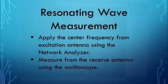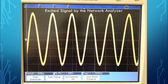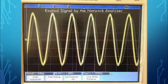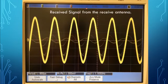The resonating wave measurement is carried out by connecting both the excitation antenna and the receive antenna. We apply 1.8 GHz from the excitation antenna using the network analyzer, then measure the signal received on the receive antenna and observe the waveform on the oscilloscope. This is the signal fed into the cavity by the excitation antenna, and this is the received signal from the receive antenna on the oscilloscope.